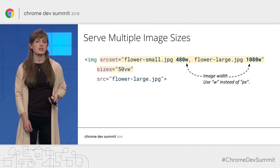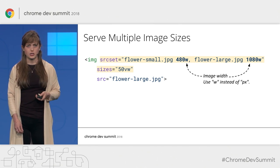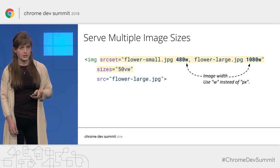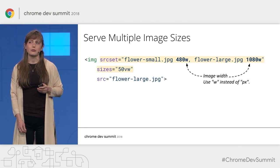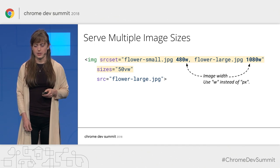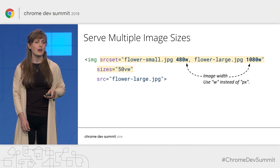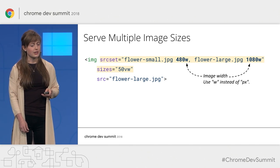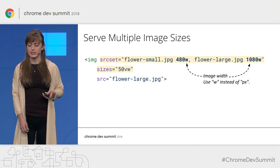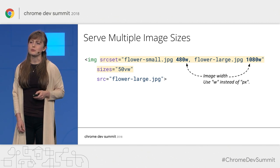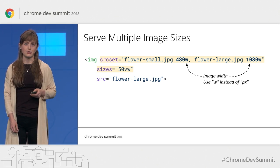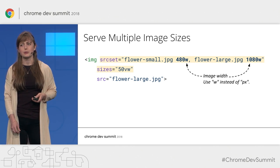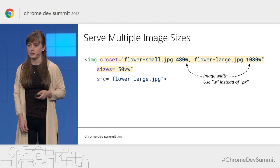In addition to creating multiple sizes of your images, you'll need to update your HTML by adding the srcset and sizes attributes. The srcset attribute allows you to list multiple versions of the same image — in addition to the file path, you'll also want to include the width of the image, which saves the browser from having to download the image to figure out how large it is. The sizes attribute tells the browser the width that the image will be displayed at, and using both together allows the browser to figure out which image it should download.